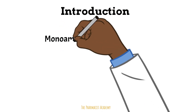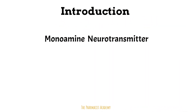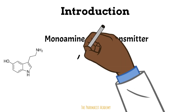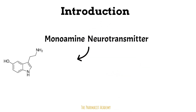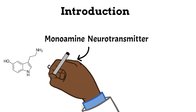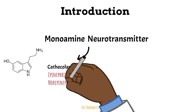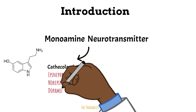Serotonin is a monoamine neurotransmitter — meaning it transmits messages from nerve cells to parts of the body. It's a monoamine, which refers to its structure; it's derived from an amino acid. Other examples of monoamine neurotransmitters include the catecholamines, such as epinephrine, norepinephrine, and dopamine.